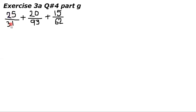It is 25 upon 31 plus 20 upon 93 plus 15 upon 62. You can see that these are three fractions and we have to add these three fractions but the denominators are not same.